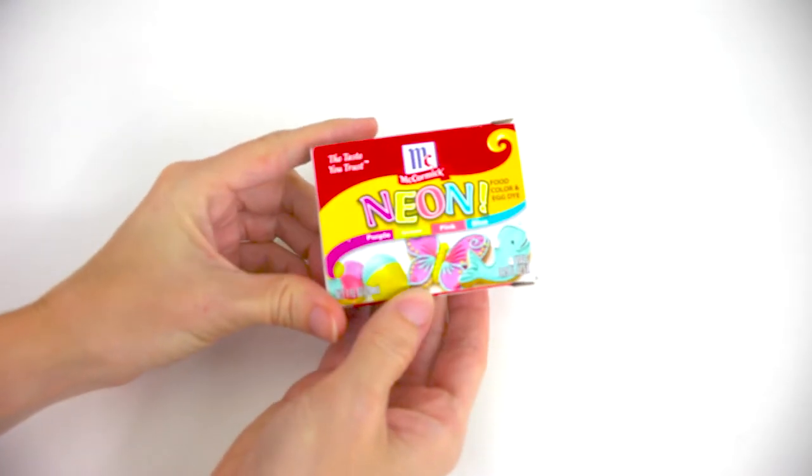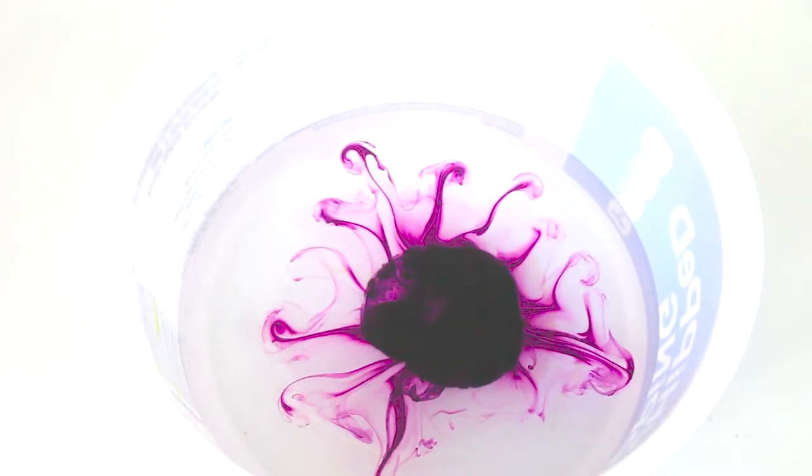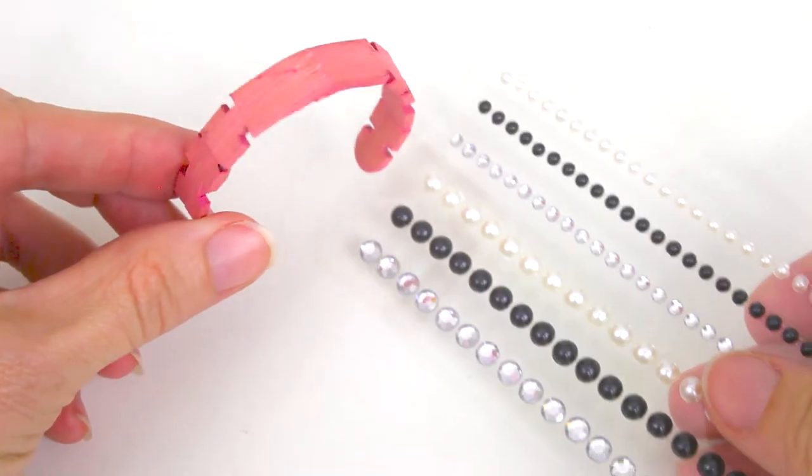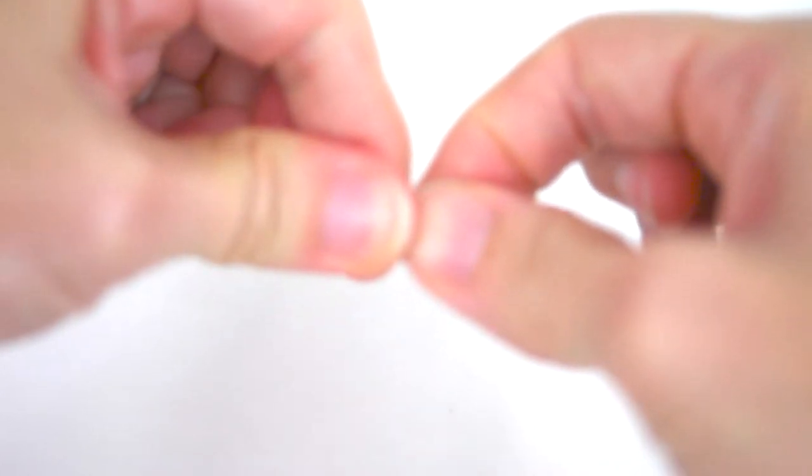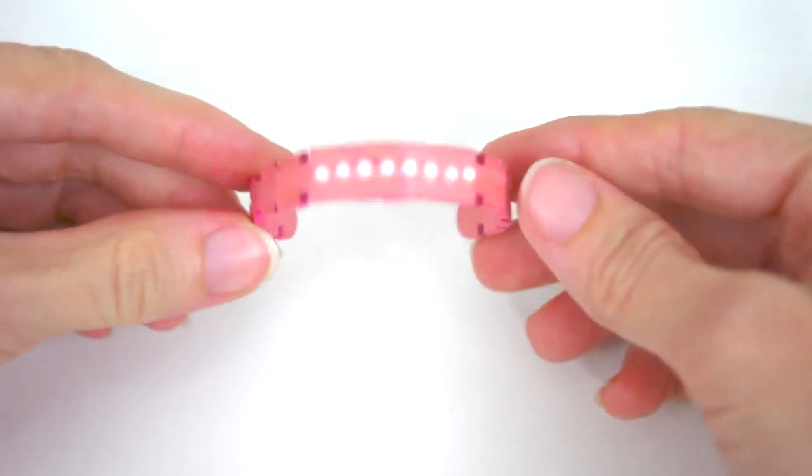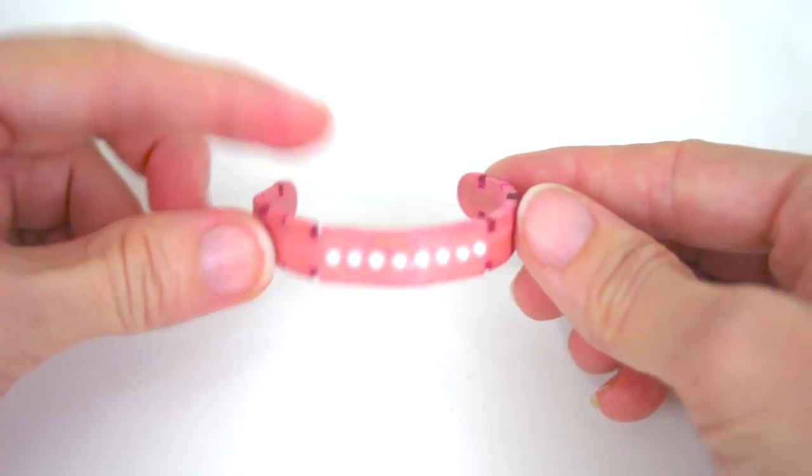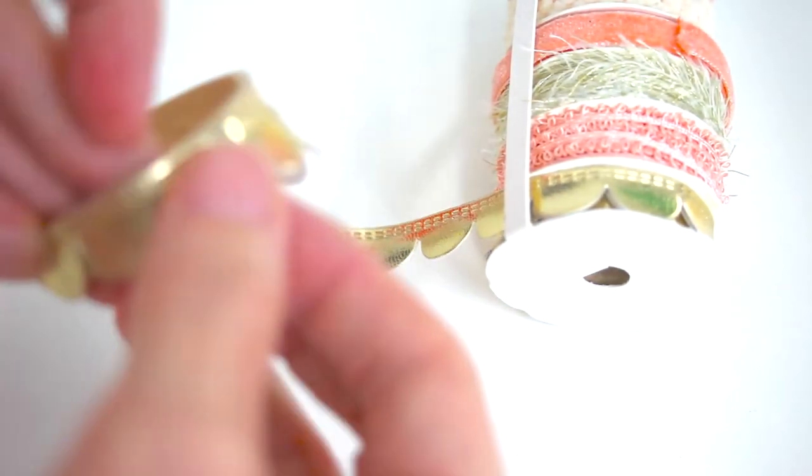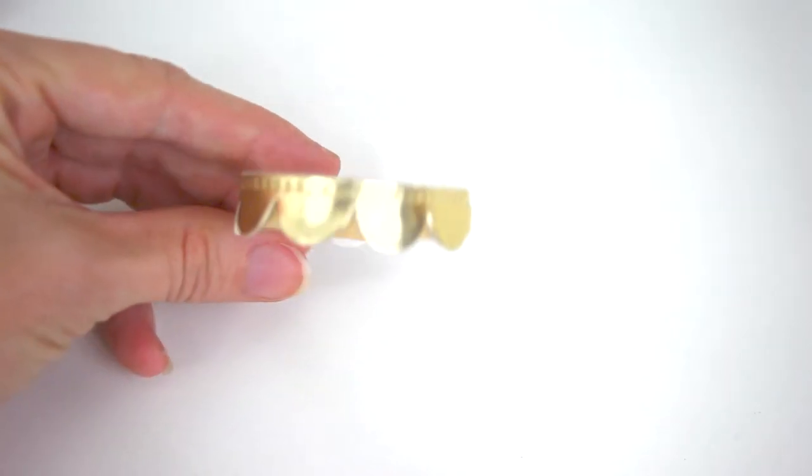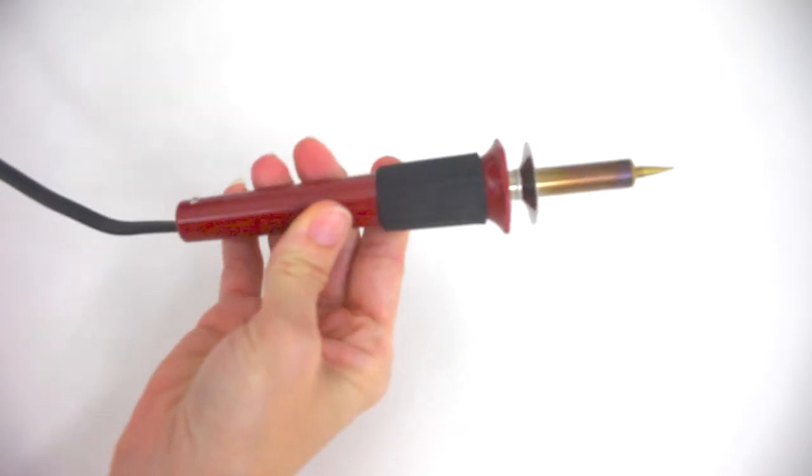Soak in Easter egg dye if you want, and don't forget to add some bling. How about using a wood burner? Now it's getting hot in here.